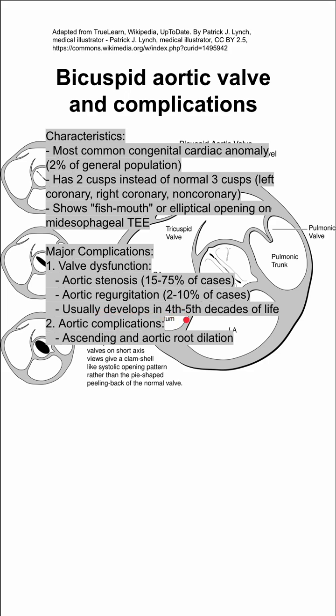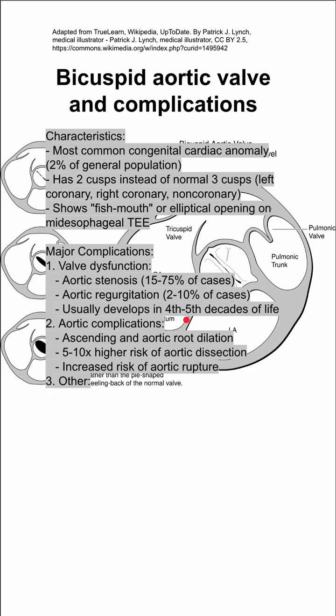Aortic complications can also result. Ascending aorta and aortic root dilation can happen. You're at 5 to 10 times higher risk of aortic dissection, and you have an increased risk of aortic rupture.